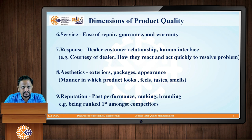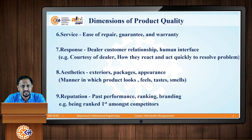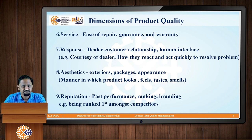The next attribute is service — ease of repair, guarantee, and warranty aspects of the product. Then next is response — the dealer-customer relationship. Human interface is involved in response: the courtesy of the dealer, how quickly they react and resolve customer problems. Next is aesthetic — the exteriors, packaging, and appearance of the product; the manner in which the product looks, feels, tastes, or smells. Next is reputation — past performance, ranking, and branding. If your product is ranked first among competitors, it has a reputation in the market.